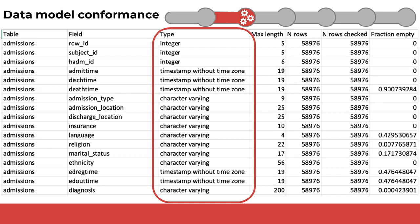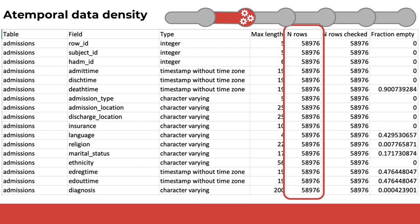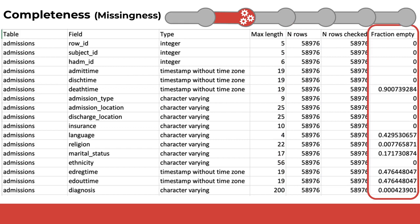Density is a data quality dimension focused on the amount of data available for analysis. Atemporal density examines the overall amount of data available without regard to any temporal window such as days, months, quarters, or years. The N rows column provides insight into this data quality dimension. Completeness is often referred to by its antonym, data missingness. The fraction empty directly measures missingness in each column of a table. Notice that there is a wide range of missingness across different columns. Many have zero missing values. ED registration time and ED out time, which represent the time when a patient was registered into and out of an emergency room respectively, have the highest rate of missingness at 47.6%. Other fields have varying levels of missingness.